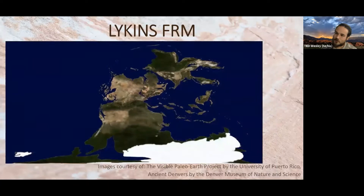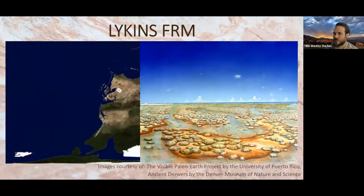This is what the world looked like — pretty unrecognizable; we might start to pick out a little bit of South America and Africa merged together at the bottom. This would have been a really bad time to be on planet Earth. In Colorado especially, it was a super hot environment — daytime highs commonly reaching 120 to 130 degrees Fahrenheit. It did have water, but unfortunately it was hyper-saline, almost like the Dead Sea.